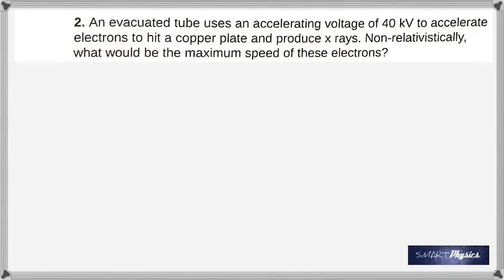Alright, here are the problems on electric potential. This question talks about an evacuated tube using an accelerating voltage of 40 kilovolts to accelerate electrons to hit a copper plate and produce x-rays. It's interesting to note that x-rays are actually produced by fast moving electrons hitting a metal, which is what you see here.